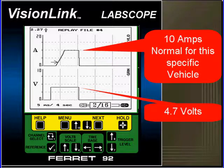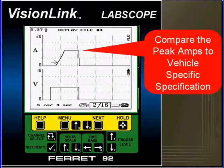10 amps. That's what we're showing on our example. This is normal for this specific vehicle that we're working on. Our EST is specific and in this case it's 4.7 volts. Compare the peak amps to vehicle specific specifications.